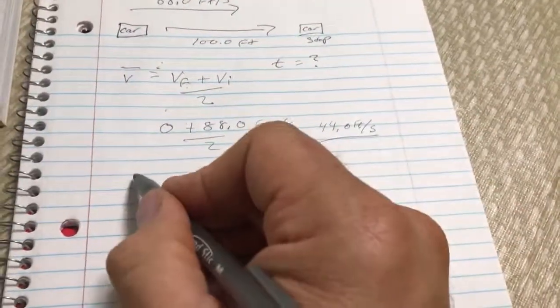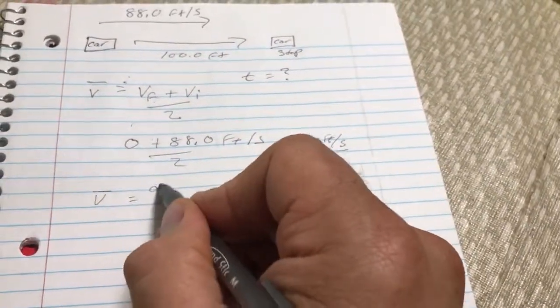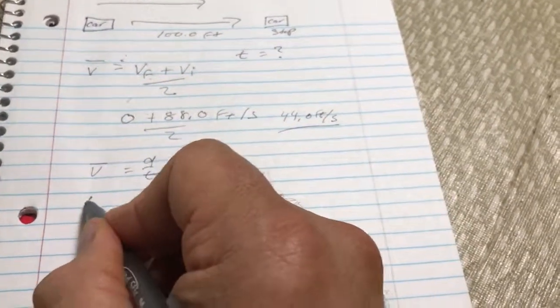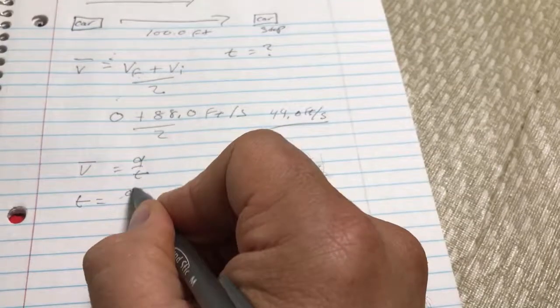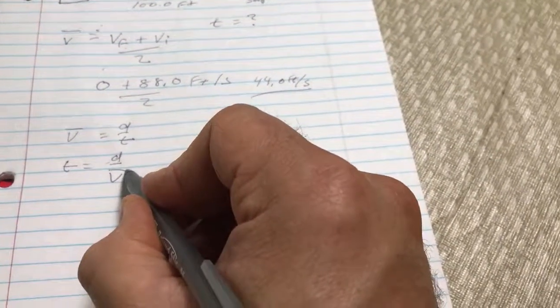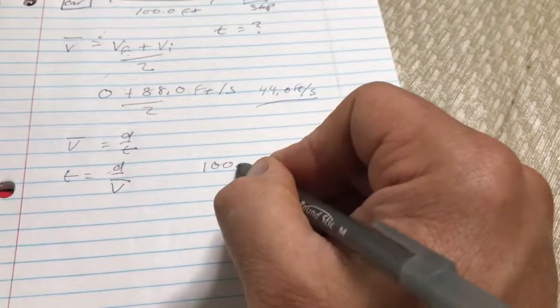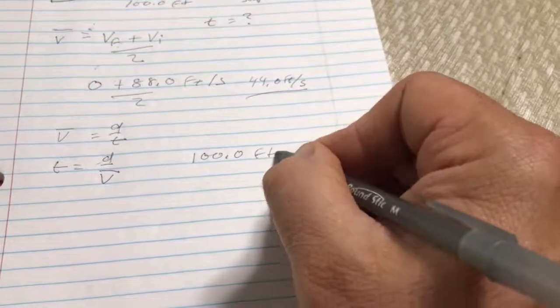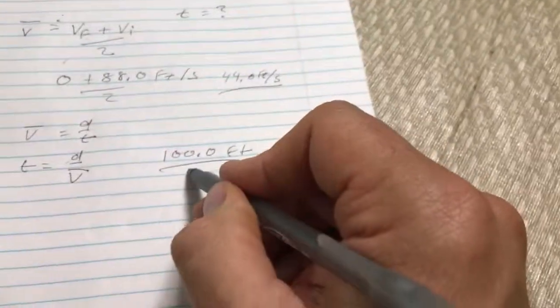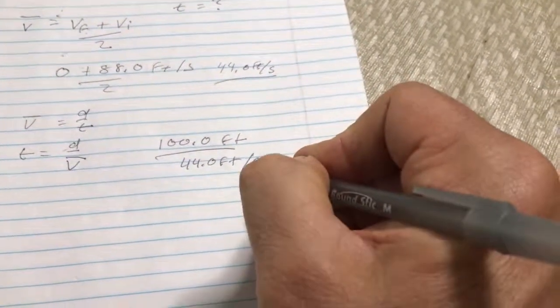So then we have our average velocity, which is distance over time, but we need time. So we'll do time equals distance over velocity, right? And then that would be 100.0 feet over the 44 that we just got, 44.0 feet per second.